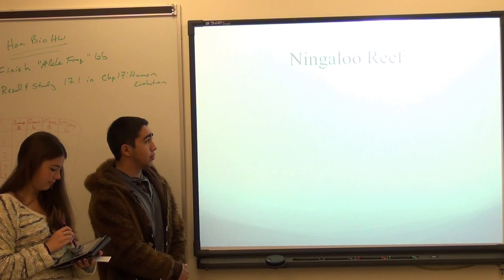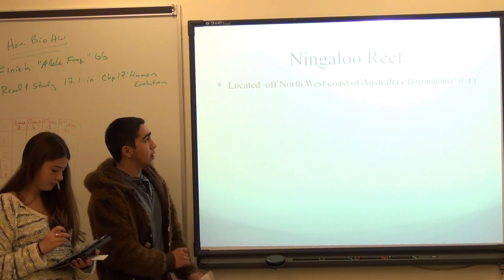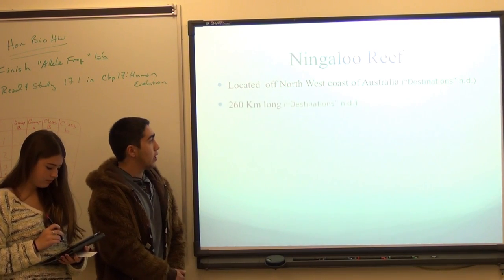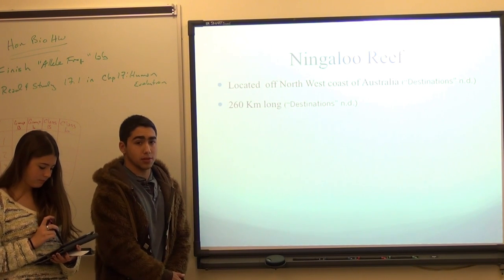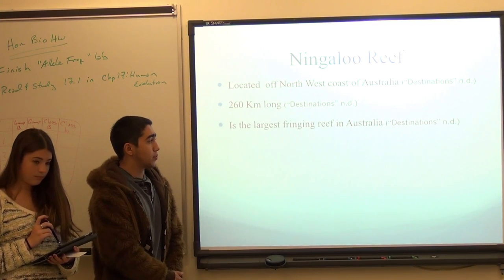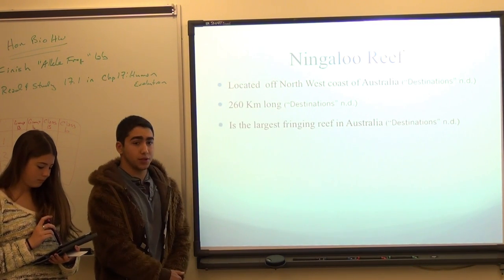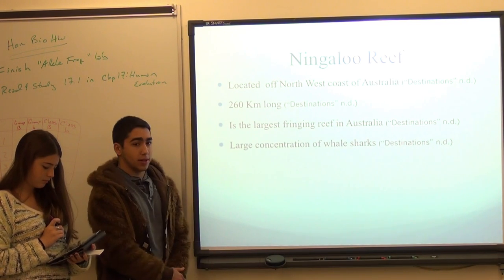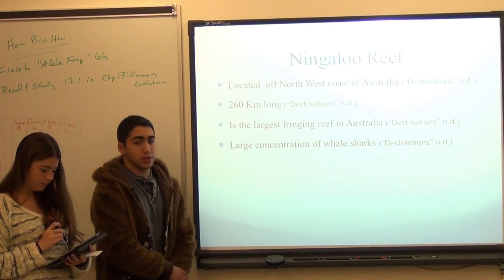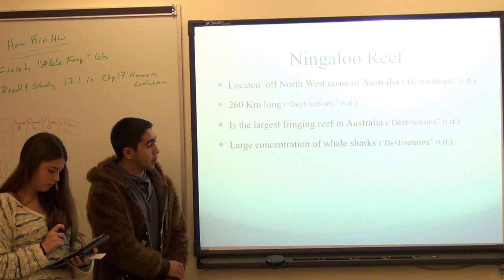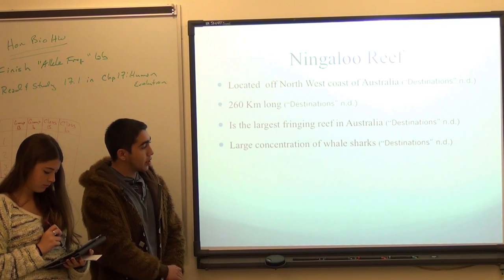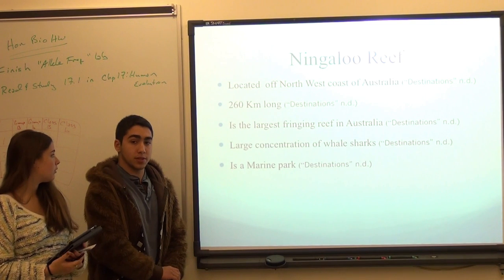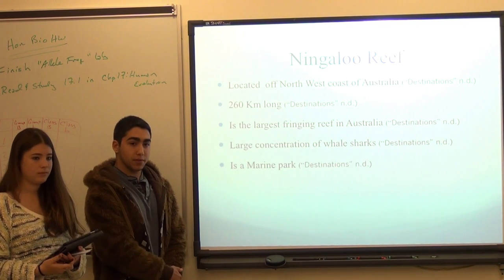I also covered the Ningaloo Reef in Australia. It's located off the northwest coast of Australia, is 260 kilometers long, and is one of the largest fringing reefs in Australia. One unique thing about it is that it has one of the largest concentrations of whale sharks compared to any other reef. There's also a marine park, so it's protected, kind of like the Great Barrier Reef.